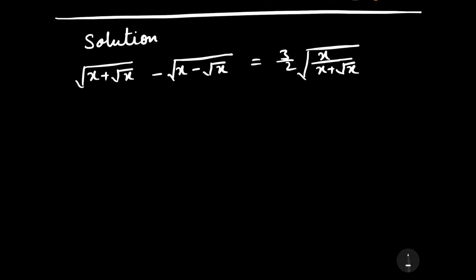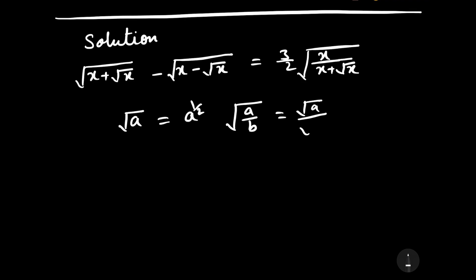We should know one formula: square root of a can be written as a to the power 1/2, and square root of (a/b) can be written as square root of a divided by square root of b, which equals a to the power 1/2 divided by b to the power 1/2.